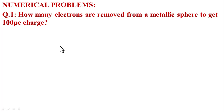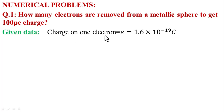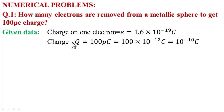First of all, write the given data and known values. The charge on one electron, e, is equal to 1.6 multiplied by 10 raised to power minus 19 coulombs. Charge Q is equal to 100 picocoulombs. Since 1 pico equals 10 raised to power minus 12, and 100 is 10 raised to power 2, Q equals 10 raised to power minus 10 coulombs.